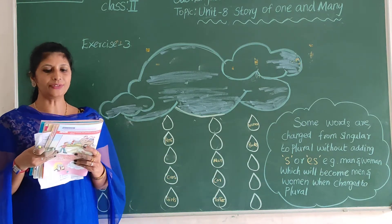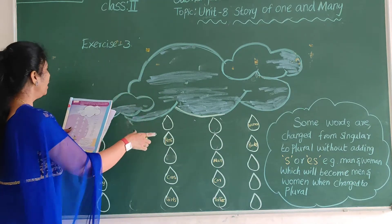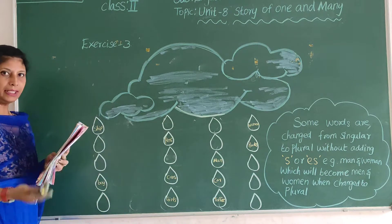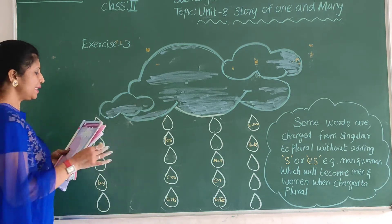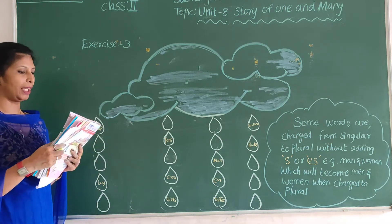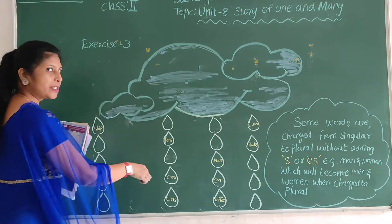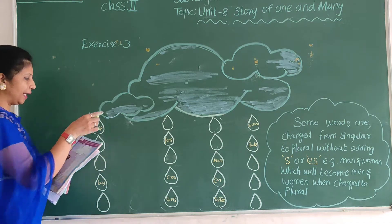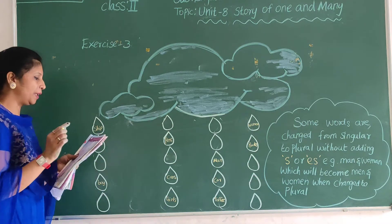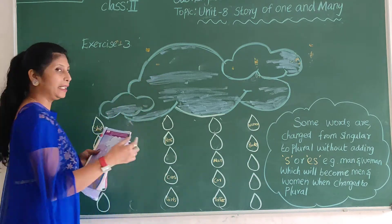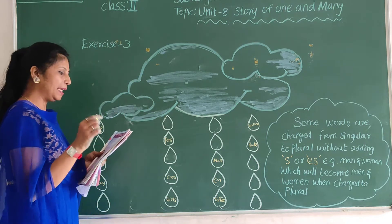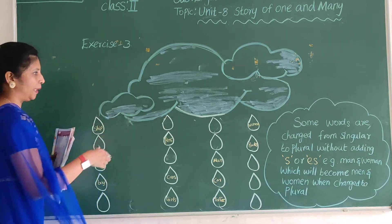Words are raining from the clouds in the sky. Either singular or plural of each set is missing. So write the missing words in the droplets.